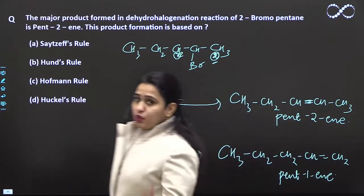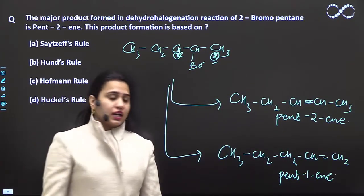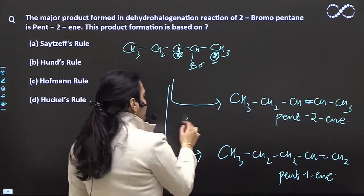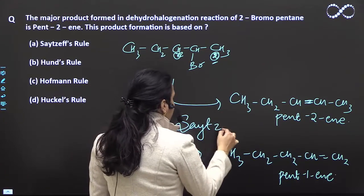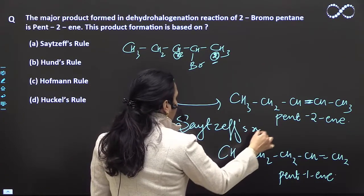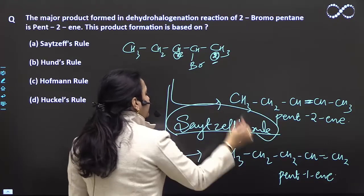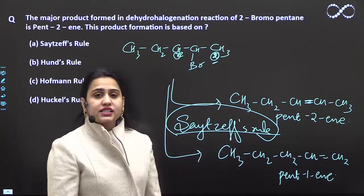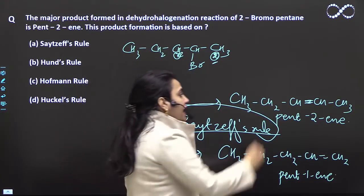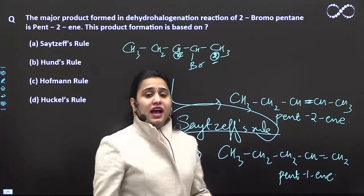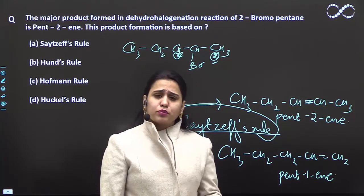They say that pent-2-ene is your major product. This is due to Saytzeff's rule, that your alkenes will be highly substituted. Highly substituted has more hyperconjugated structures. More hyperconjugation means more stability.